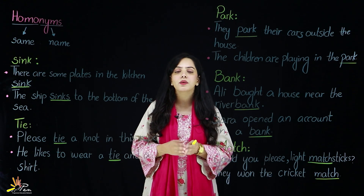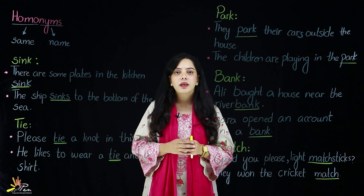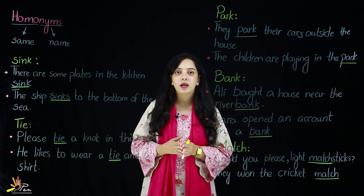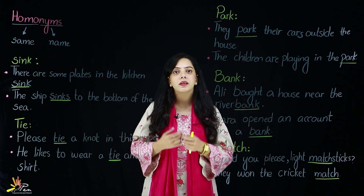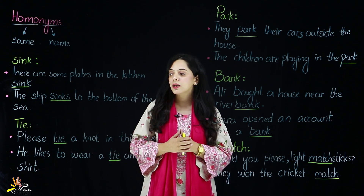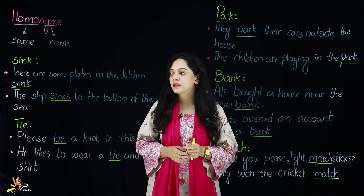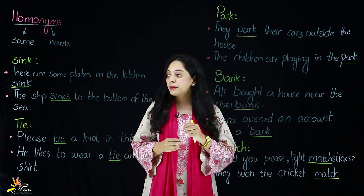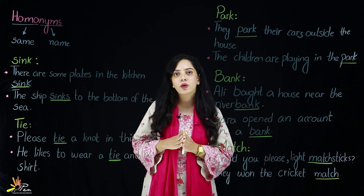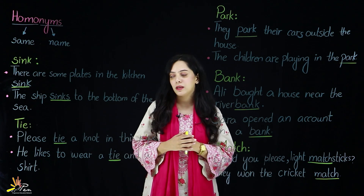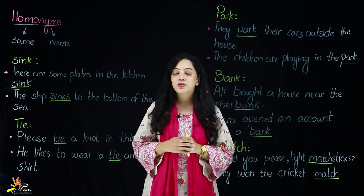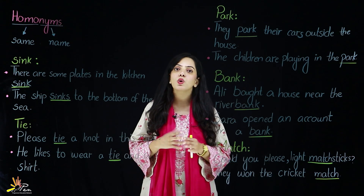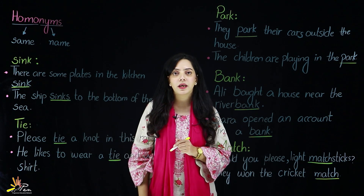Next: 'tie'. Tie has two meanings. One meaning is to bind something, to tie a knot. The second meaning — as you have often seen — when men get dressed formally, they wear a piece of clothing around their neck called a tie, which is used in formal dressing. Example sentences: 'Please tie a knot in this rope' — here, tie means to bind or knot the rope. 'He likes to wear a tie and shirt' — here, reading the sentence, it is clear which meaning of tie is being used — the wearable tie.